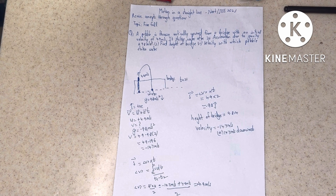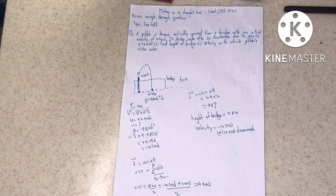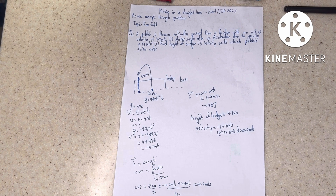The time interval is given as 2 seconds, since the pebble strikes the water after 2 seconds. Applying the first equation of motion, v = u + at: since I have taken upwards as positive, u = +4.9 and a = −9.8. Substituting: v = 4.9 − 9.8 × 2 = 4.9 − 19.6 = −14.7 meters per second. The negative sign indicates the pebble is moving downwards, consistent with our sign convention.